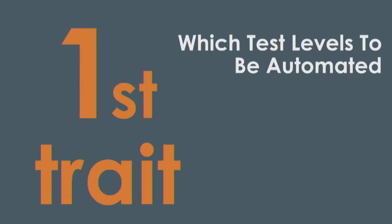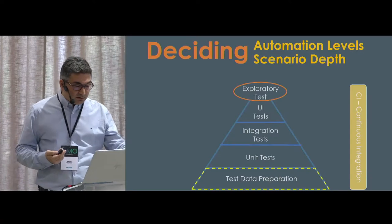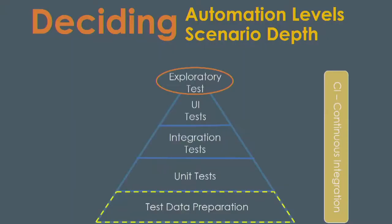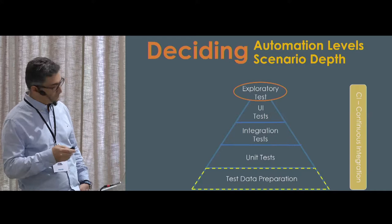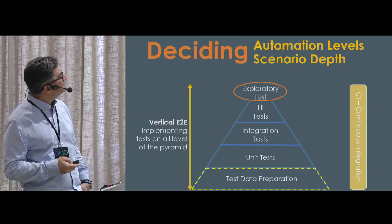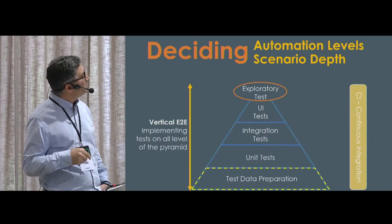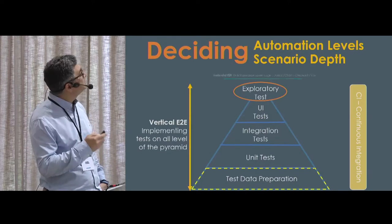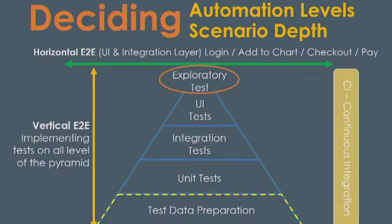Our first trait is which test levels to be automated. Everyone knows this pyramid well. I add a test data preparation layer and we look at end-to-end tests. Here is the vertical end-to-end tests — if you automate all of these layers, it's a vertical end-to-end test automation. And here is horizontal end-to-end test automation, performed under this layer, which is also called acceptance tests.